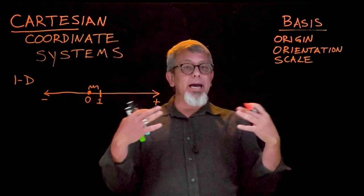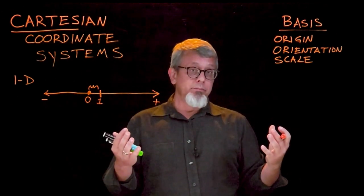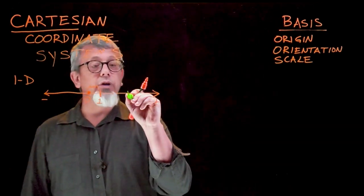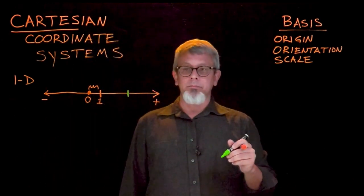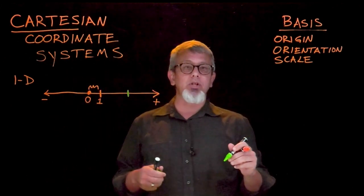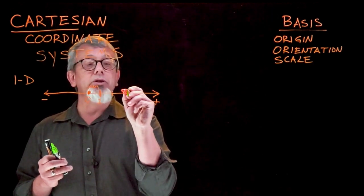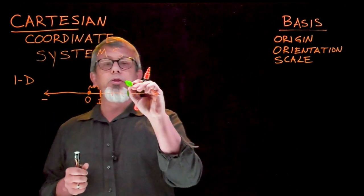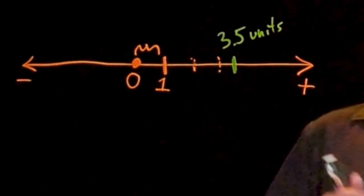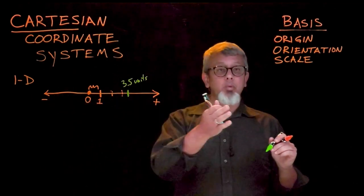What this allows me to do is take any place on this number line and associate a place with a number. For example, if I put a place right there, assuming I know my basis, I can now calculate a number associated with that place. Maybe I look and say the units are about two units, and maybe there are about three units — so that might be something like 3.5 units, whatever our unit is, represented by that location. Every location corresponds with a number, and one number describes a place in space in this one-dimensional basis.